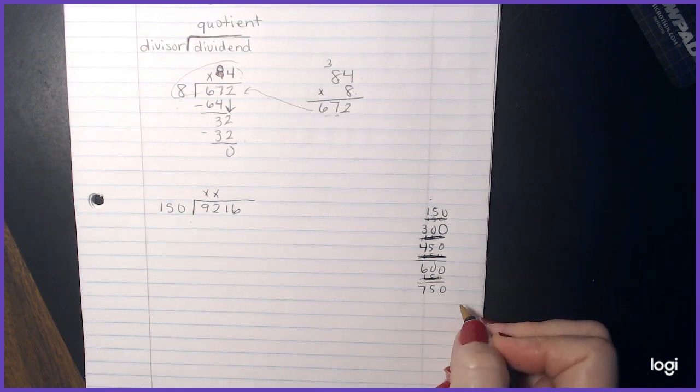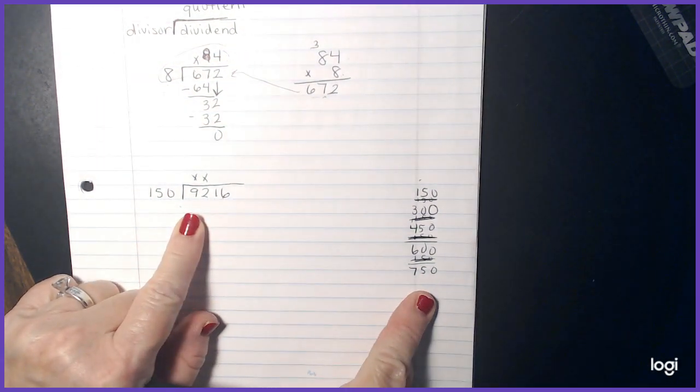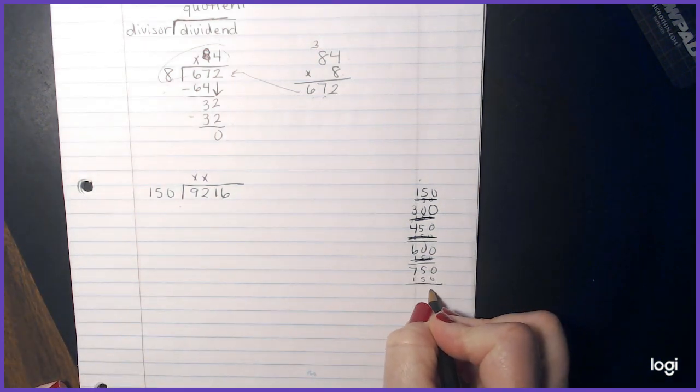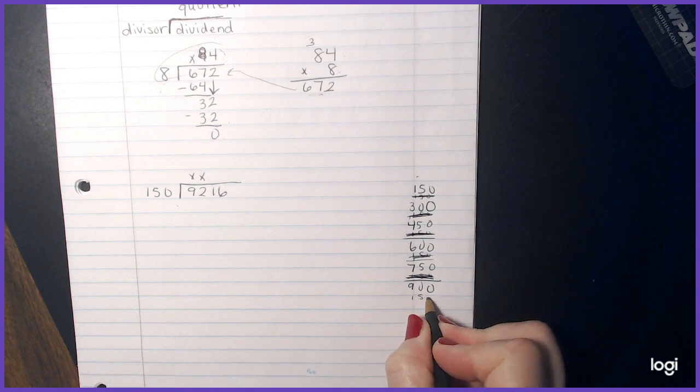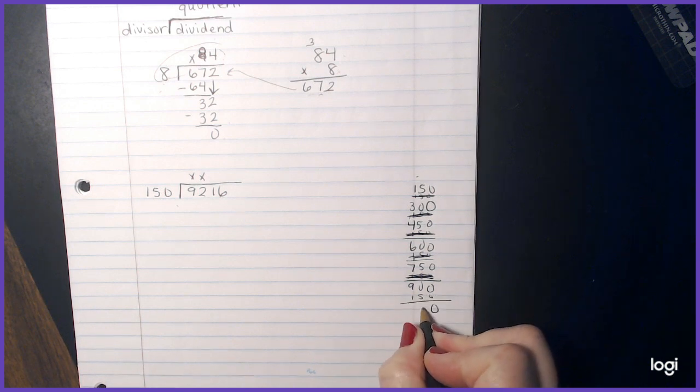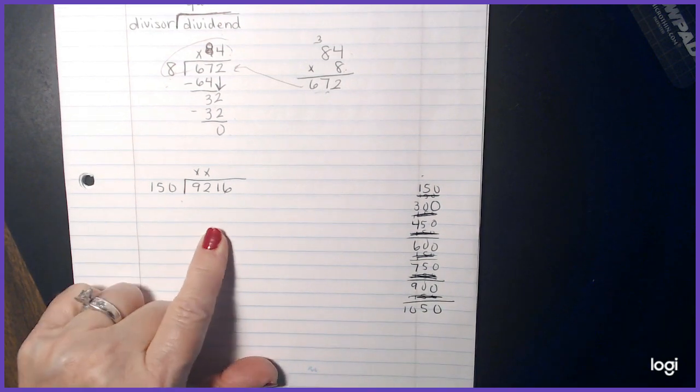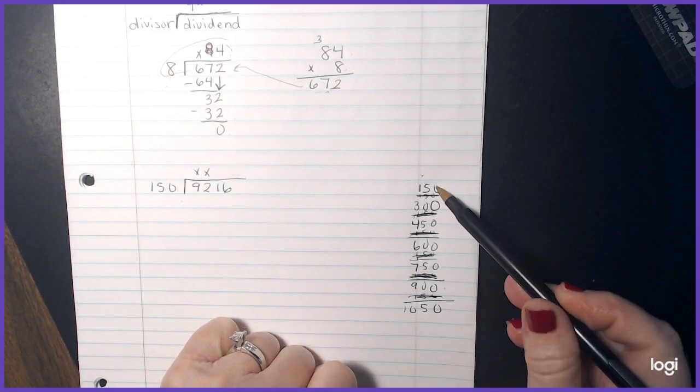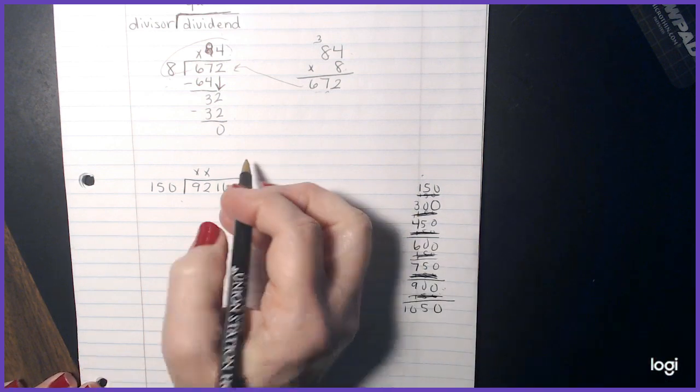So I'm getting closer, I'm getting closer to 926. I'm at 750. Let's just do one more and see what happens. 900. Now, obviously, if I did one more, I went over 921. So this 900 is probably the closest, which would have been six times. So I'm going to make sure I put a six.